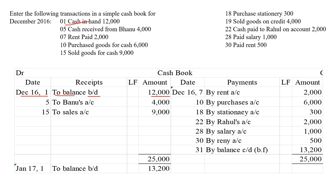Moving on to the next one: cash received from Banu. In this transaction, cash is coming into the business. Banu is paying cash. Since cash is coming in, we have to record it in the debit side — to Banu's account. Write the date and record the transaction, and write the amount in the amount column.